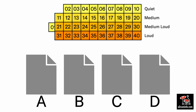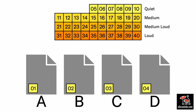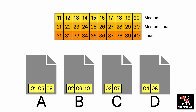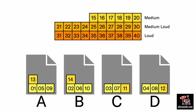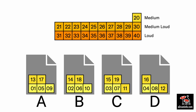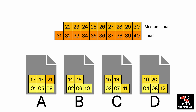So say I have 40 head samples, from quiet to loud, and I have named them 01 to 40 — 01 is the quietest and 40 is the loudest. I share the samples between four files, named A, B, C, and D, so that each file gets an even number of samples from quiet to loud.